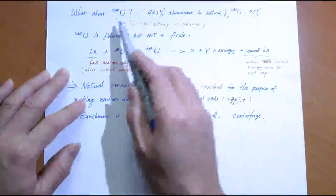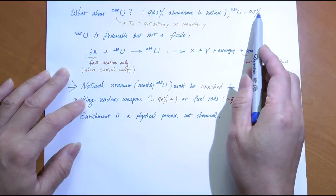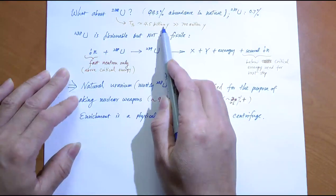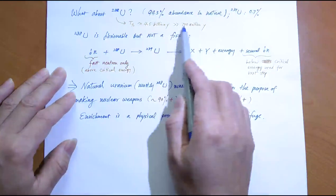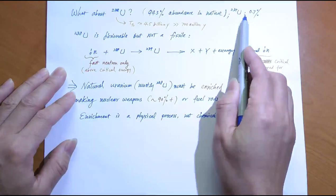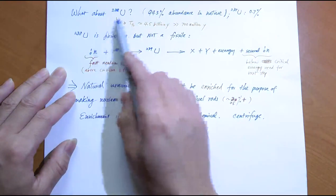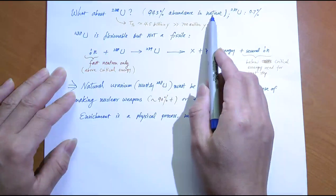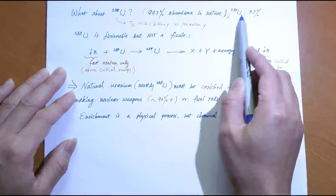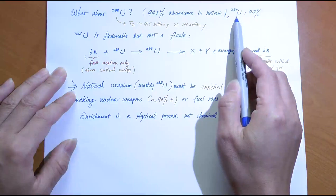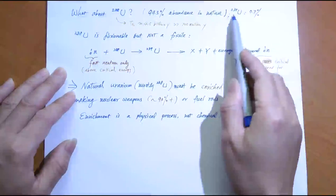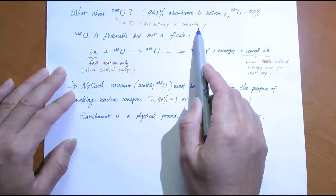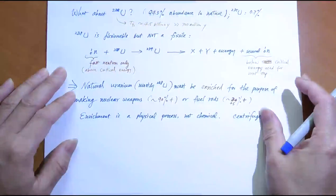Why can't we use U-238? The half-life of U-238 is 4.5 billion years — about the age of the Earth — much longer than the 700 million years of U-235. Since these are primordial elements that existed before the Earth formed, over 4–5 billion years most of the U-235 has already decayed through alpha and beta decay, so it's mostly gone. U-238, with its much longer half-life, still remains in relatively greater quantities — that's why it's the predominant form.